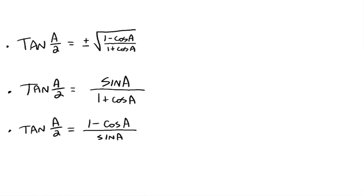We're not going to derive the tangent ones, but there are three of them — you can derive them on your own. Tangent of a over 2 could equal plus or minus the square root of 1 minus cosine a over 1 plus cosine a, where the plus or minus depends on the quadrant of a over 2. Tangent of a over 2 can also be written as sine a over 1 plus cosine a, where the sign falls out naturally. A third form is 1 minus cosine a over sine a. These may look unusual, so check with your instructor for the derivations.